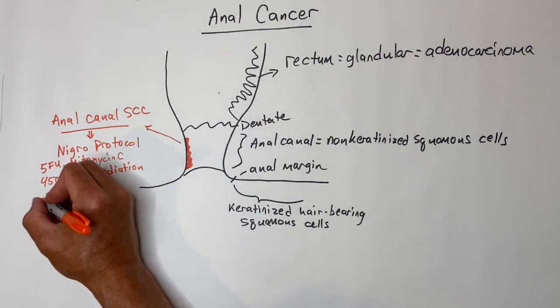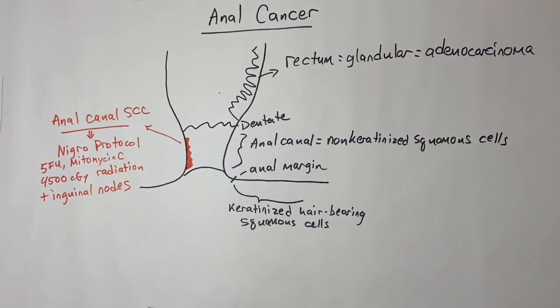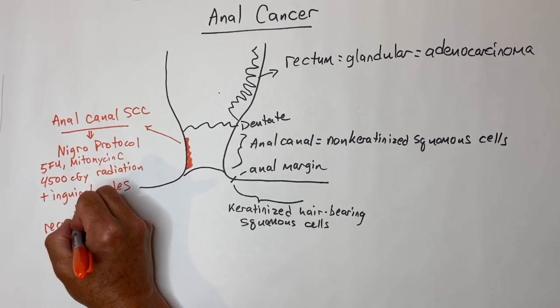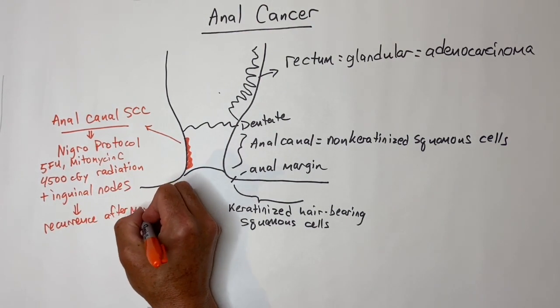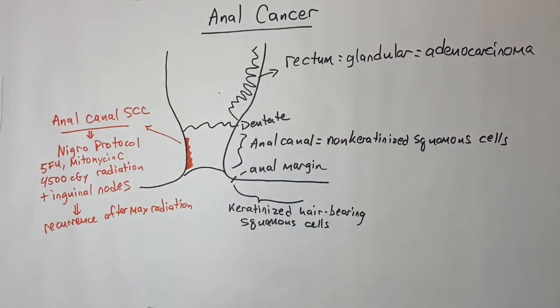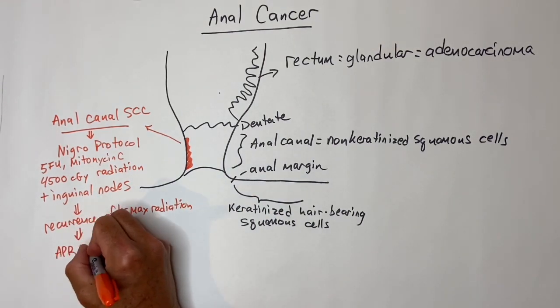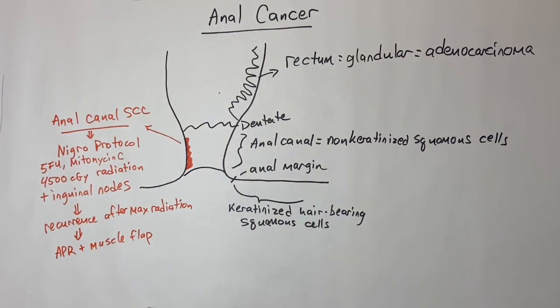Since the anal canal commonly drains to the inguinal lymph nodes, feel those for cancer, and also the radiation usually includes these nodes bilaterally prophylactically. If the anal squamous cell cancer comes back after chemoradiation, then you would need to do a salvage APR surgery and consider a muscle flap to the perineum.